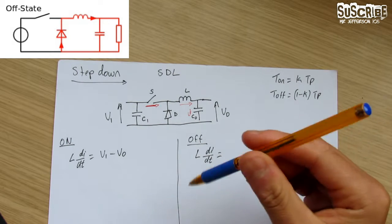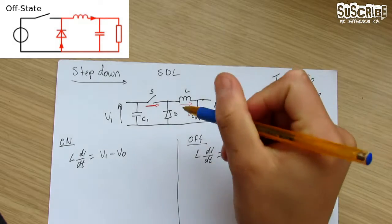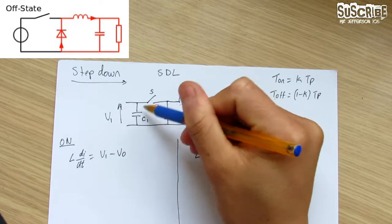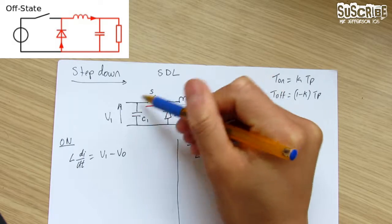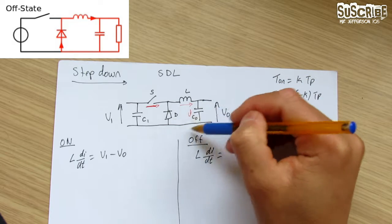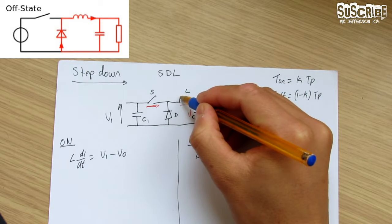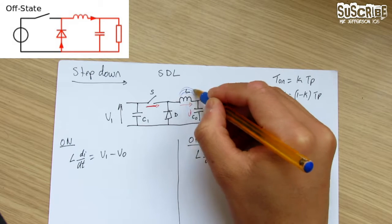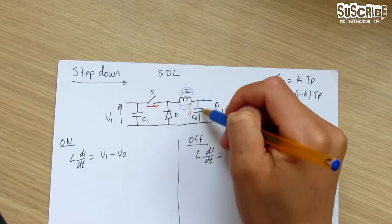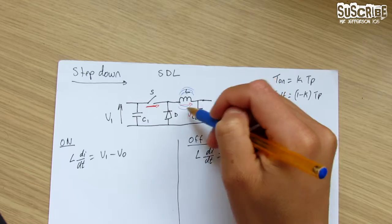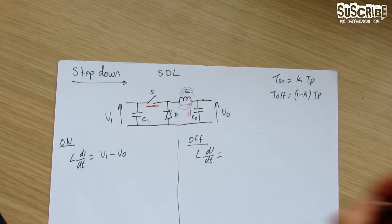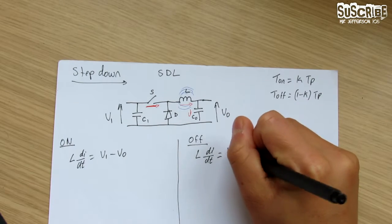On the off time, represented by the blue pen: if the switch is open, nothing on that side can conduct because it is open. However, in this section it can, because it's a closed loop. The magnetic field stored on the inductor needs to discharge somehow, so it discharges going through this loop. For that reason the voltage in this side is V_out.